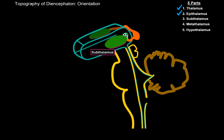If you look inferiorly to the thalamus, you'll find the subthalamus — another important component of the diencephalon. Then on the lateral side of each thalamus, you'll find two nuclei called the medial geniculate body and the lateral geniculate body. These two nuclei are termed the metathalamus, which is another significant part of the diencephalon.